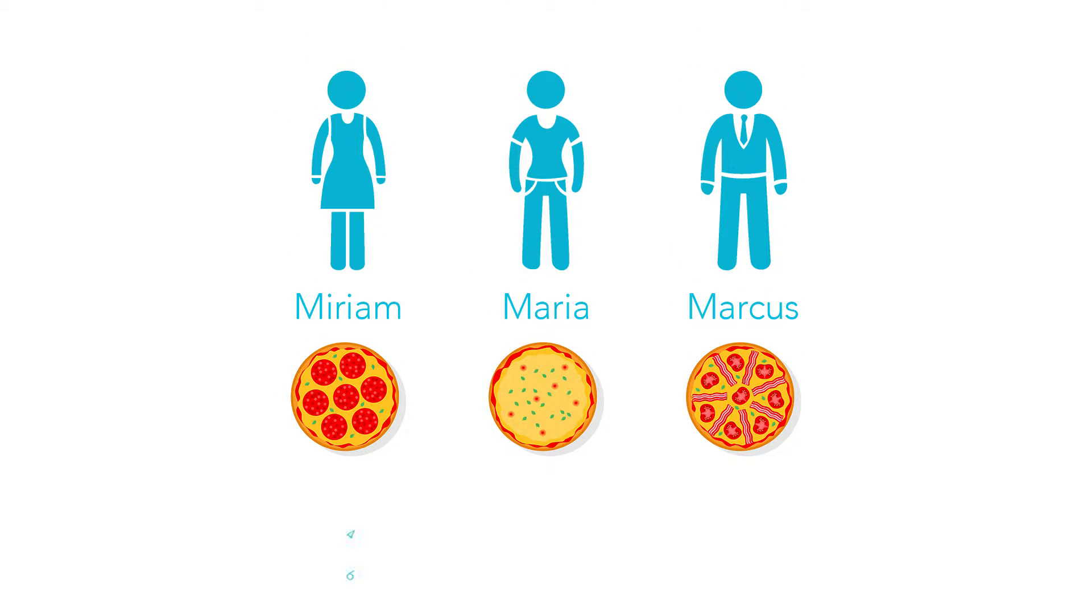Here's an example. At a party Miriam eats 4/6 of a pizza, Maria eats 3/4 and Marcus eats 3/8 of a pizza. We want to find out who ate the most and who ate the least.